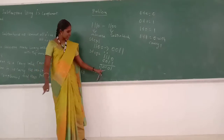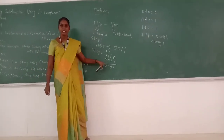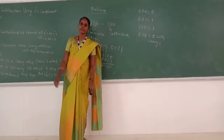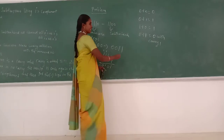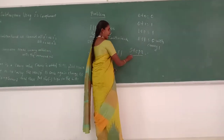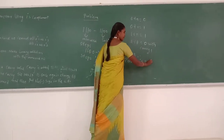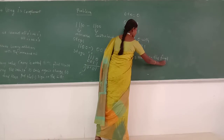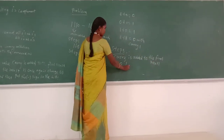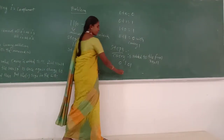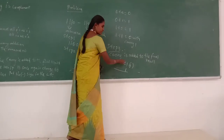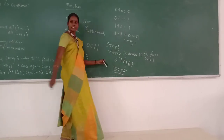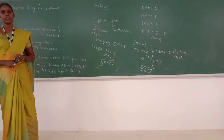Step 3: Based on the problem, we may get a carry value in the final result or we may not. In this problem, we get a carry value. When there is a carry value, carry is added to the final result. Take the final result value 0 1 0 1 and add the carry 1. 1 plus 1 equals 0 with carry 1; 1 plus 0 equals 1; and the result is 0 1 1 0. That is, carry is added to the final result.